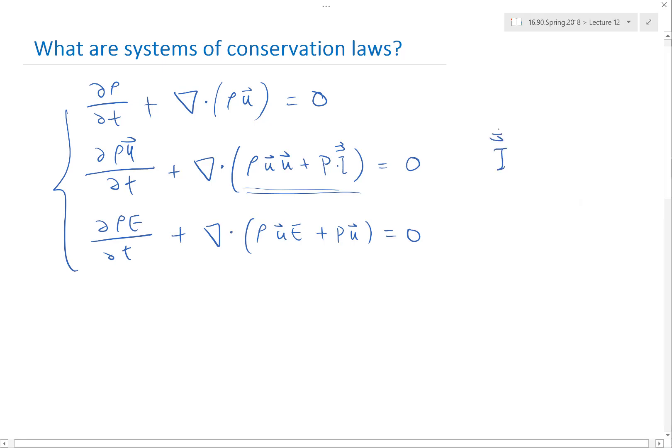The identity tensor is basically [1,0,0; 0,1,0; 0,0,1], right? Because we have velocity⊗velocity, these are outer products, not inner products, so we get a 3×3 tensor. We need to add this by a 3×3 tensor.